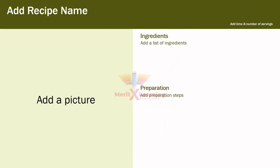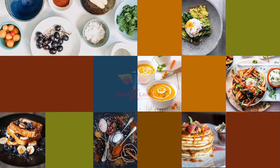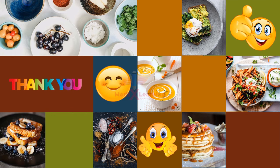Here I have given you a blank format — I want you to choose any simple recipe, maybe making tea or poha, any simple food dish or drink. Write the recipe in the given format: the name, ingredients, preparation, time taken, and number of servings. If you have a picture, you can add it or draw the food dish.